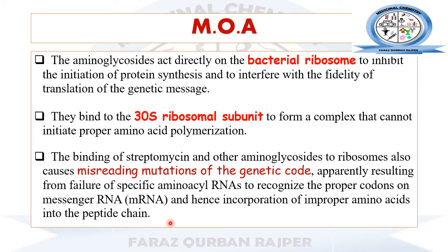Regarding the mechanism of action of aminoglycosides: aminoglycosides basically target protein synthesis in the bacterial cell. They directly act on the bacterial ribosome, where they cause inhibition of protein synthesis. Aminoglycosides normally target the 30S ribosomal subunit of the bacterial cell. The bacterial ribosome consists of two subunits — the 30S and the 50S. Aminoglycosides target the 30S subunit, where they cause the formation of a complex.